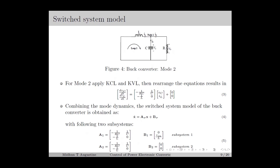With state-space modeling, we define the variables of the first-order differential equations as state variables. Here the capacitor voltage VC and the inductor current IL are the state variables, forming the elements of the state vector X. By combining both mode dynamics, we obtain the switcher system dynamics as in equation number 4. Here sigma is the switching index, which decides the active mode at the current instant. Based on the value of sigma, we can have two different modes or subsystems as given in equation number 5.